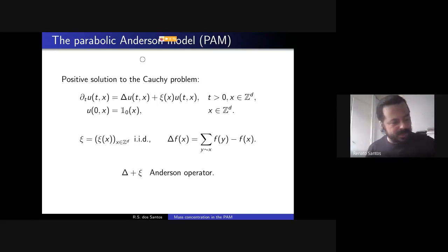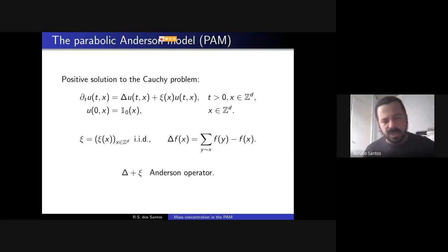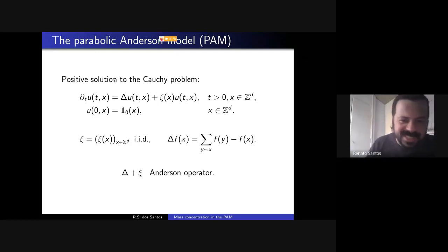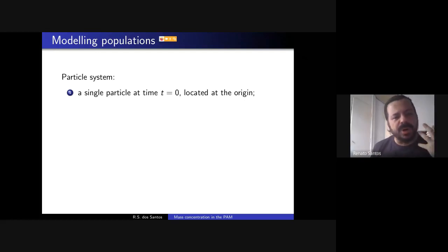Since we're probabilists, let me give a probabilistic interpretation of this equation. One interpretation is a population genetics type model — a particle system. I start from a single particle at the origin at time zero, which corresponds to the initial condition u(0,x) = 1_{x=0}.